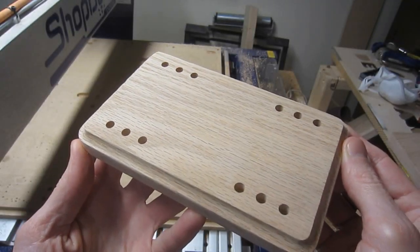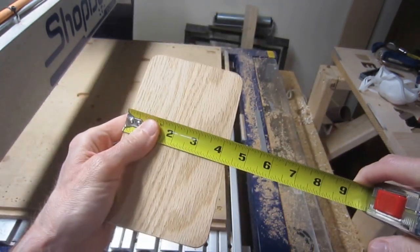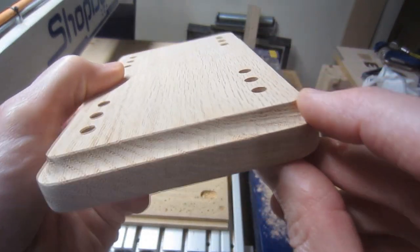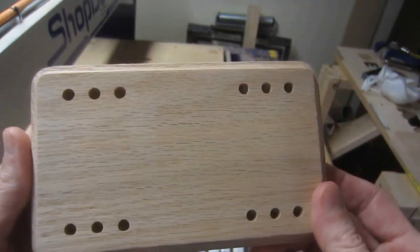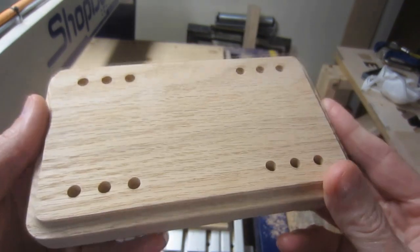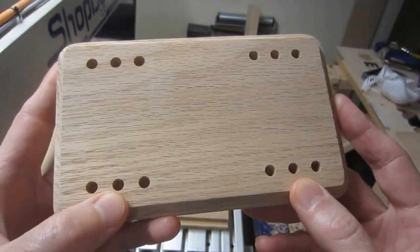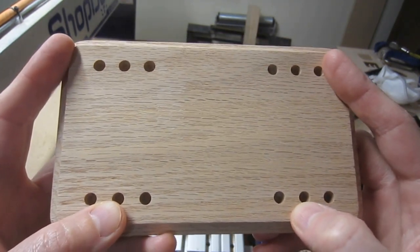The base of the napkin holder is simply a rectangle with rounded corners, measuring seven by four and one-quarter inches. To give it a bit of character, the edges were formed by running a core box bit on the vector at a depth of one-quarter inch. Finally, you'll notice four groups of quarter-inch diameter holes that were drilled to a depth of three-eighths of an inch. The holes are evenly spaced over a distance of two inches, which corresponds to the width of the legs of the side pieces.